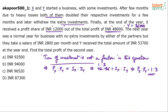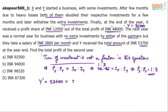Now for the next year: it was a normal year with no extra investments by either partner, but they each take a salary of ₹2,800 per month. Y received a total amount of ₹53,700. So Y's total income of ₹53,700 is equal to 2,800 × 12 plus Y's profit share — because there is both a salary component and a profit component.